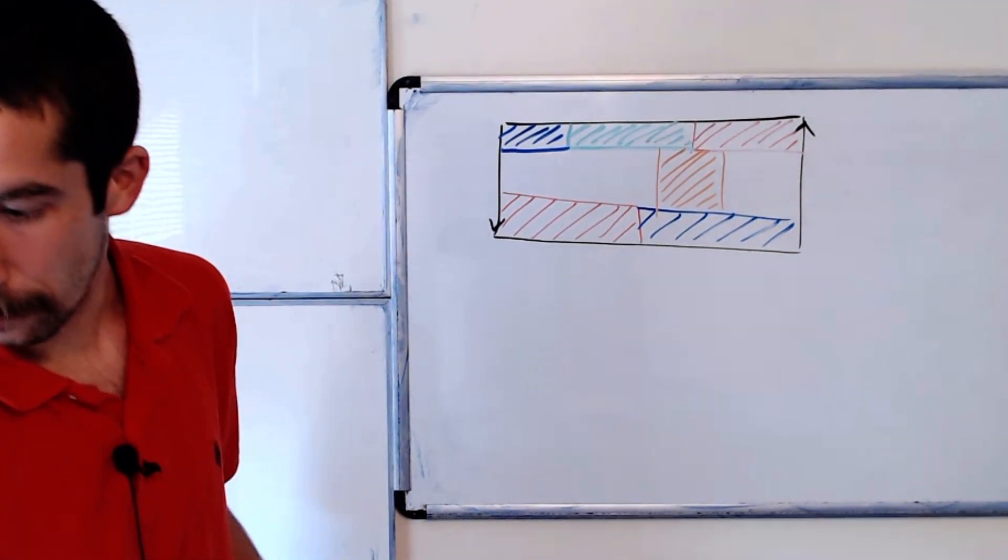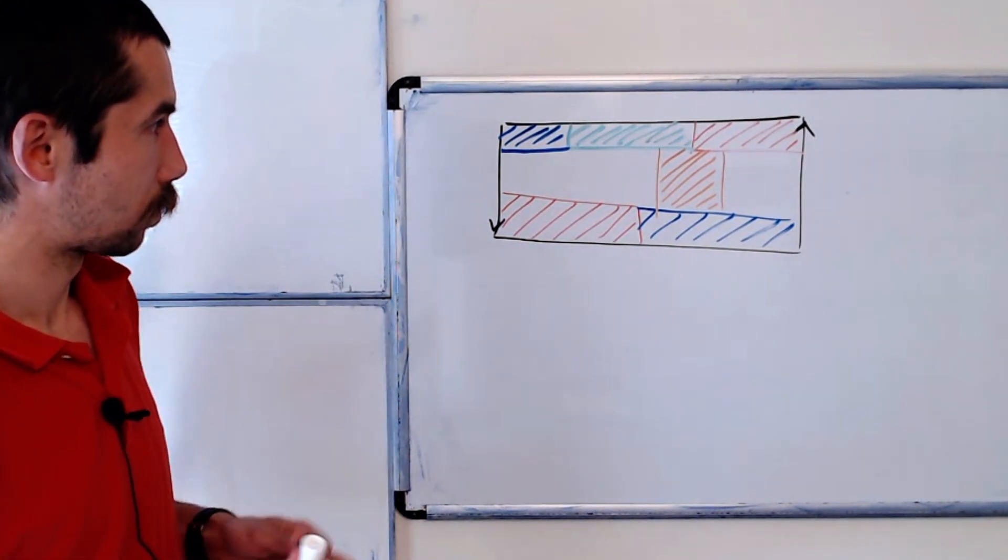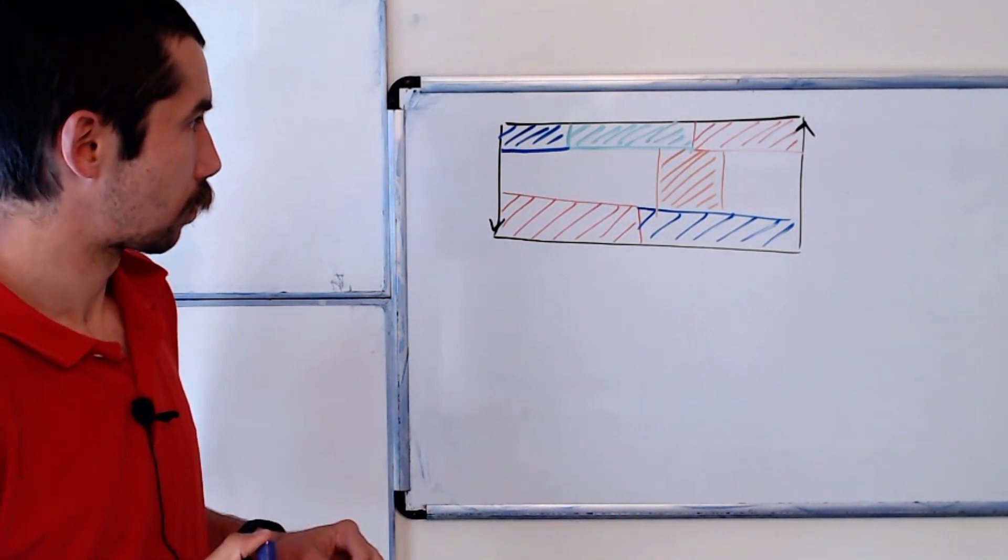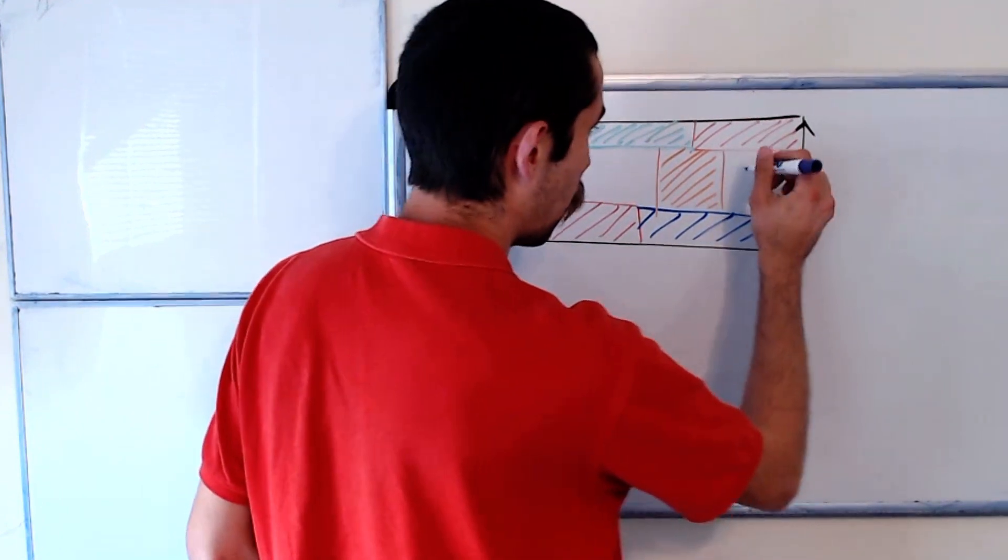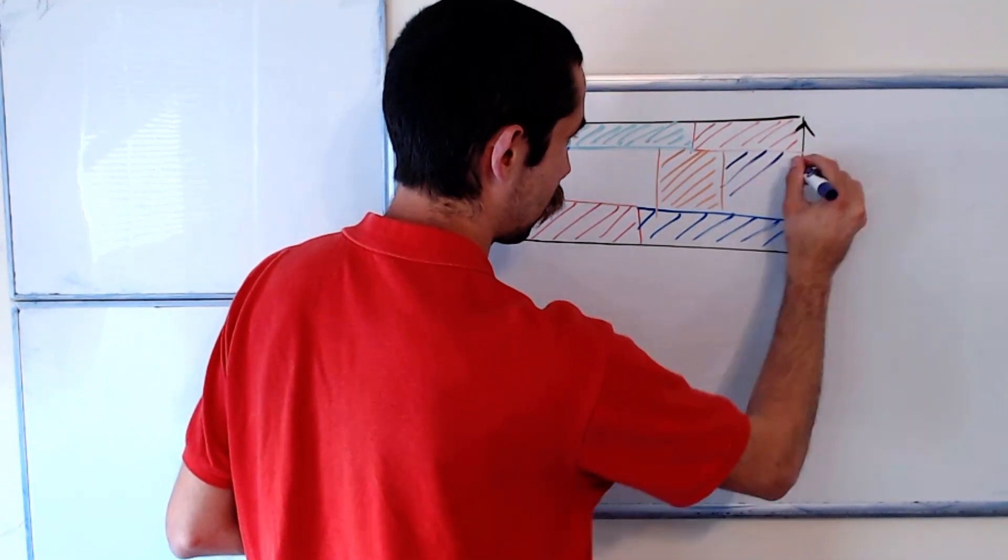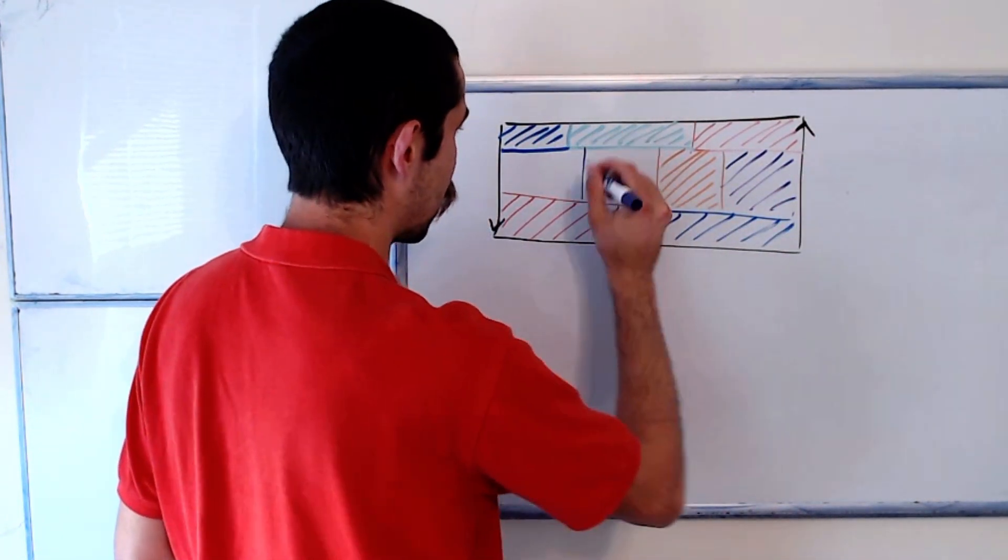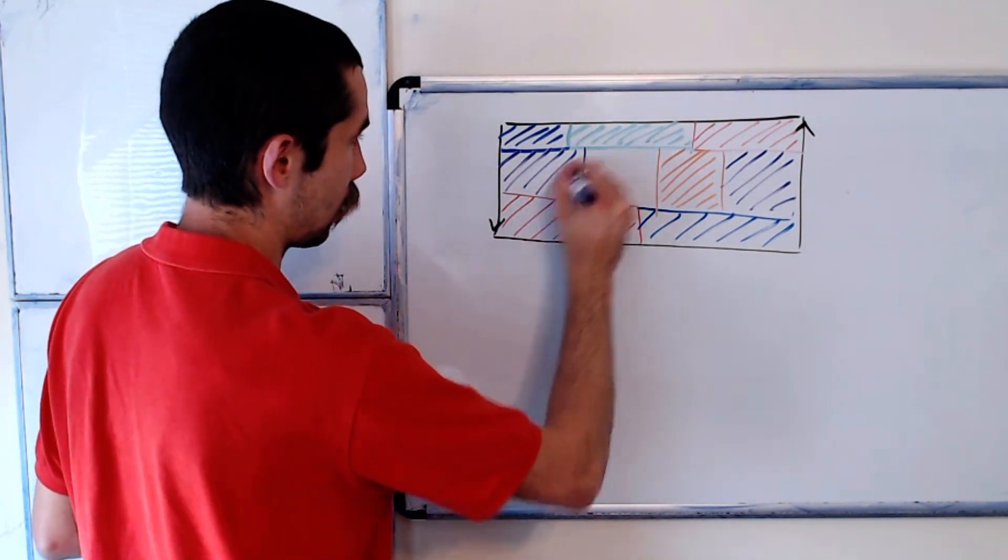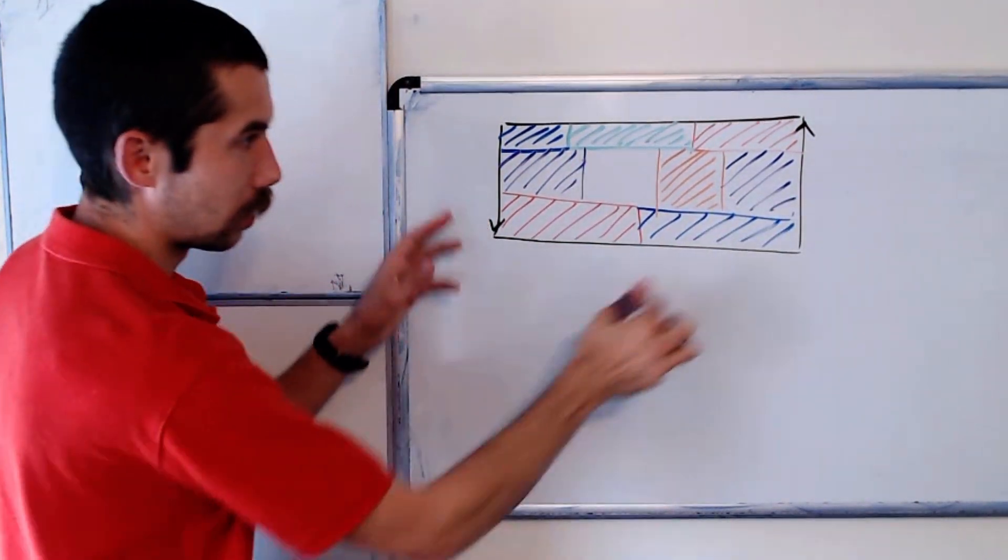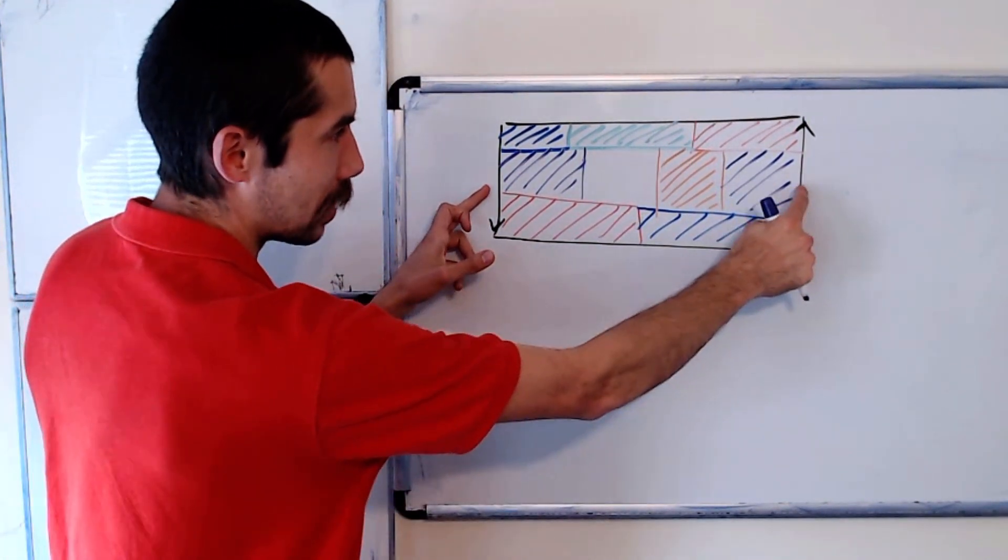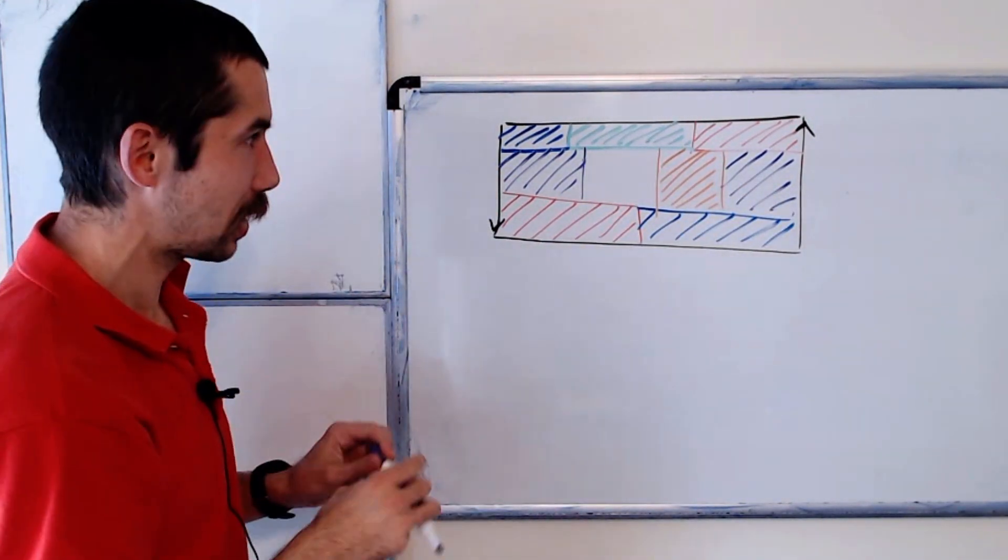Next, we could do purple. Purple, we could go from here, maybe to here. This is one, this is a connected region, right? Because this point is identified with this point over here in the Möbius band. So this is a connected region.